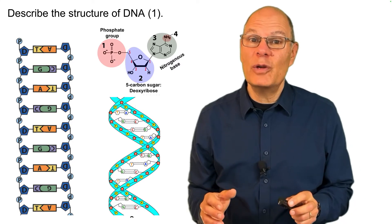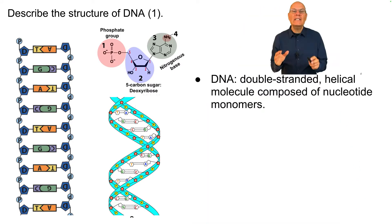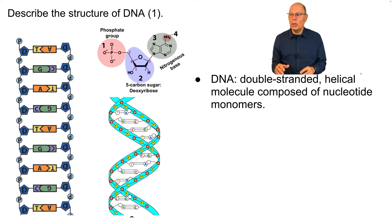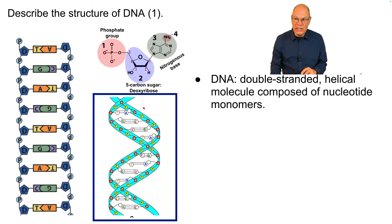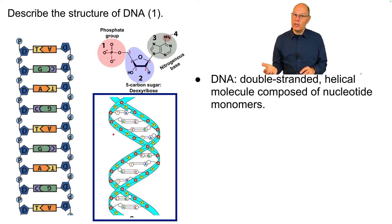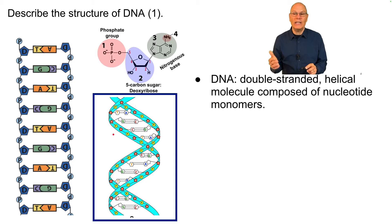Describe the structure of DNA. DNA is a double-stranded helical molecule composed of nucleotide monomers. In this flattened-out representation of DNA, here's one strand and here's the other strand. In this helical representation, you can see one strand and another strand. Because there's two strands, it's a double helix.